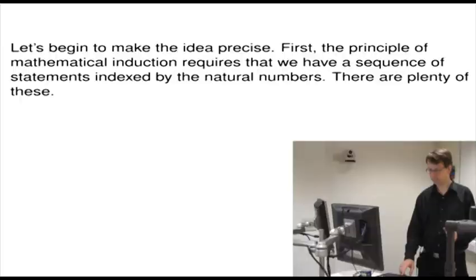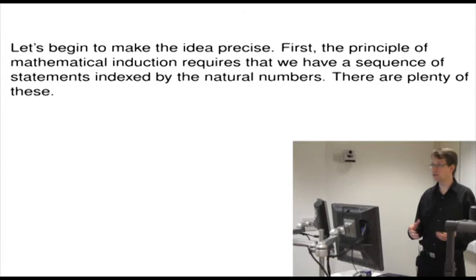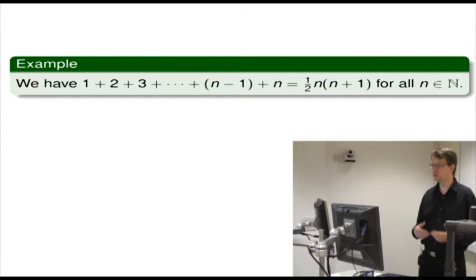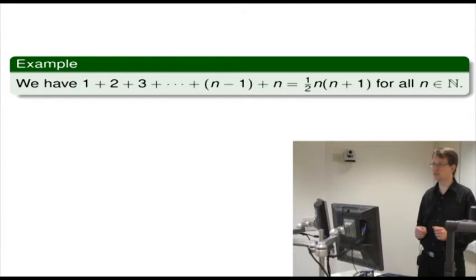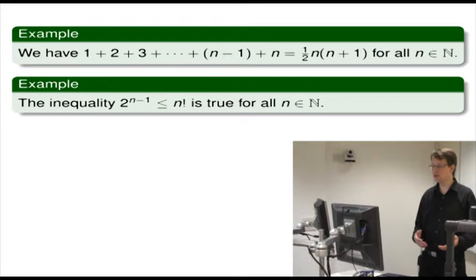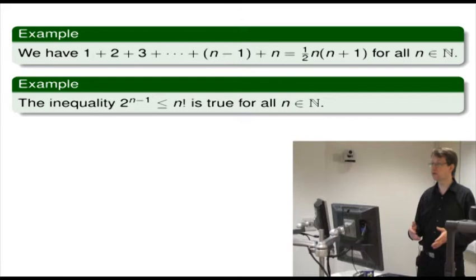Let's begin to make this idea precise. The principle of mathematical induction requires that we have a sequence of statements indexed by the natural numbers. For example, we have 1 plus 2 plus 3 plus 4, and so on, all the way up to n, equal to one half of n times n plus 1, for all natural numbers. And the second example is the inequality 2 to the power of n minus 1 is less than or equal to n factorial, where n factorial means we take all the numbers from 1 to n and multiply them together.